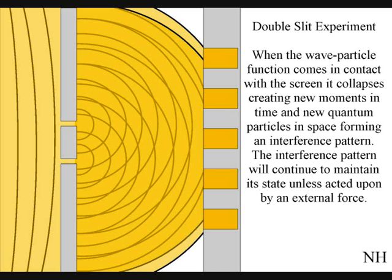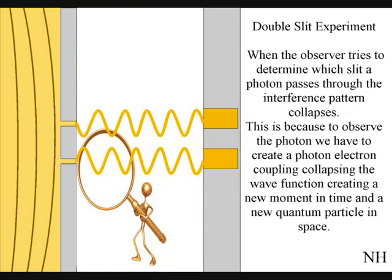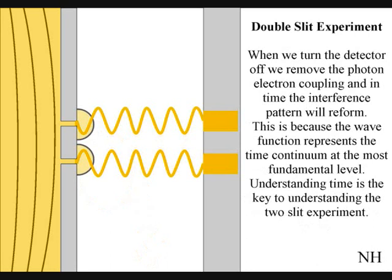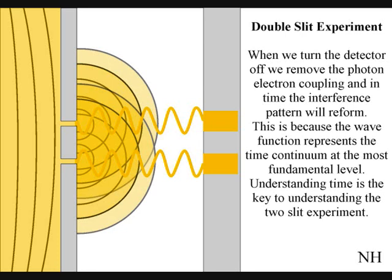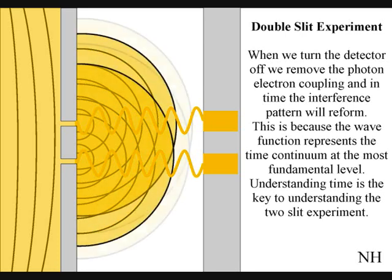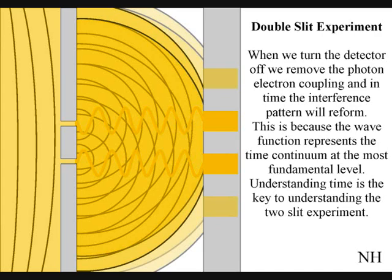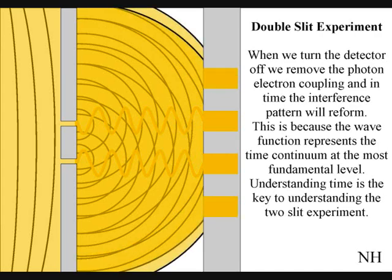When the observer turns on a detector to determine which slit a photon passes through, the interference pattern collapses. This is because to observe the photon, we have to create a photon-electron coupling, collapsing each wavefront into a new quantum particle that will have its own position in space and time. If we turn the detector off, we remove the photon-electron coupling, and in time the interference pattern will reform. Just like in Newton's first law of motion, the interference pattern will continue to maintain its state unless acted upon by an external force.